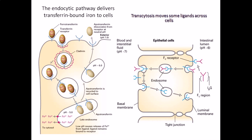The ferrotransferrin molecule comes and attaches to the transferrin receptor present on the surface of the cell membrane. Once bound, the ferrotransferrin is internalized via the endocytosis pathway, and clathrin helps coat the whole vesicle — that is the clathrin-coated receptor-mediated endocytosis pathway.